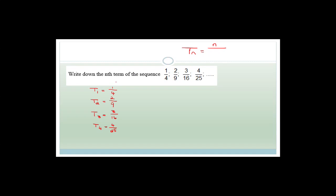The denominators are 4, 9, 16, and 25 — these are perfect squares. Four is 2 squared, nine is 3 squared, sixteen is 4 squared, and twenty-five is 5 squared. We need to relate T1 to 2 squared, T2 to 3 squared, T3 to 4 squared, and T4 to 5 squared. Do you realize that this number is one more than the term number? Two is one plus one, three is two plus one, four is three plus one, five is four plus one.